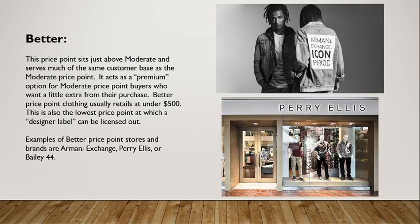Next, we have the better category. This price point sits just above moderate and serves much of the same customer base. It acts as a premium option for moderate price point buyers who want a little extra from their purchase. Better price point clothing usually retails at under $500. This is the lowest price point at which a designer label can be licensed out. Designers license out different brands at different price points to reach a larger customer base, but if they start selling below the better category, their premium label starts to be diluted — people no longer see the premium value of a designer label.